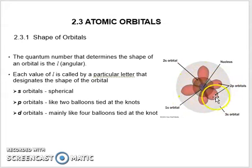And shell 3. This is 3s orbital, which is sphere-shaped. S is the shape of the orbital. S means spherical, P means dumbbell—or it looks like two balloons tied at the nodes—and D orbitals are cloverleaf-shaped, or mainly like four balloons tied at the nodes.